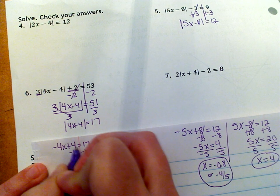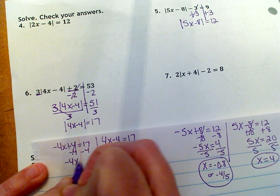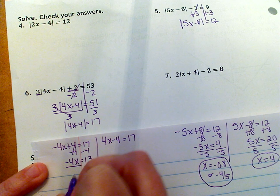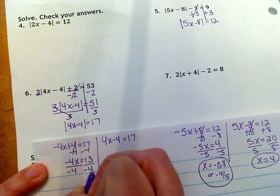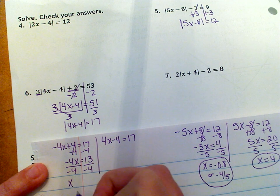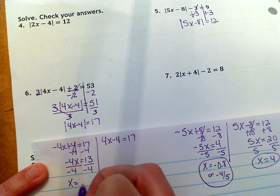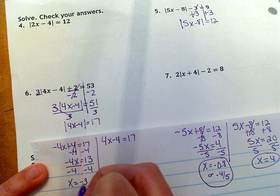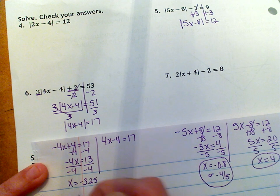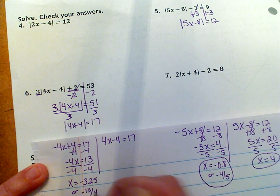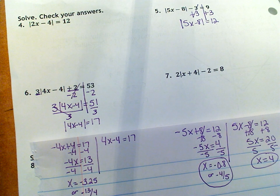So we subtract four. So negative four X is equal to 13, and then we divide by negative four. So X is equal to negative 3.25, or you could leave it as negative 13 over four.